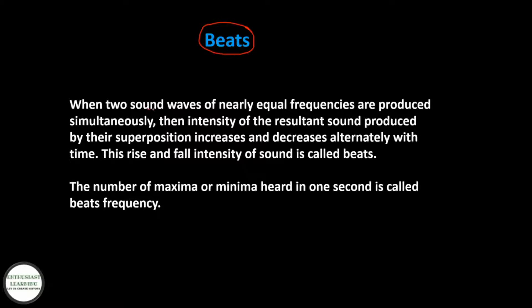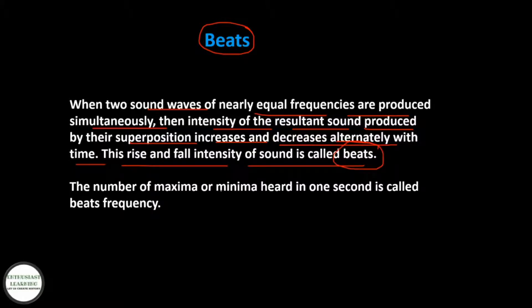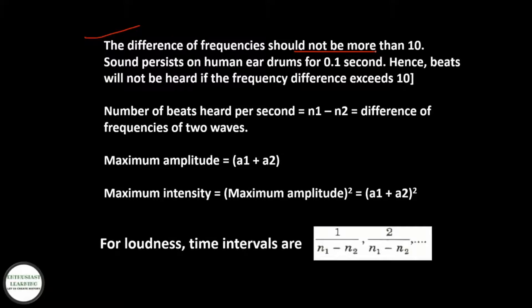Beats: when two sound waves of nearly equal frequencies are produced simultaneously, the intensity of the resultant sound produced by their superposition increases and decreases alternately with time. This rise and fall of intensity is called beats. The number of maxima or minima heard per second is called beat frequency. The difference of frequencies should not be more than 10, as sound persists on human eardrums for 0.1 seconds. The number of beats heard per second equals N1 − N2, the difference of frequencies of the two waves.